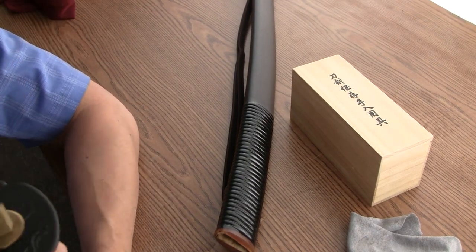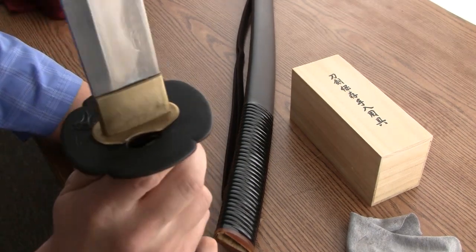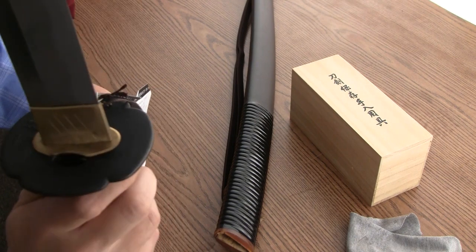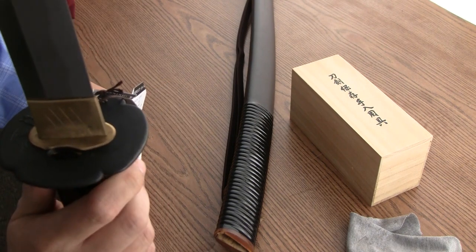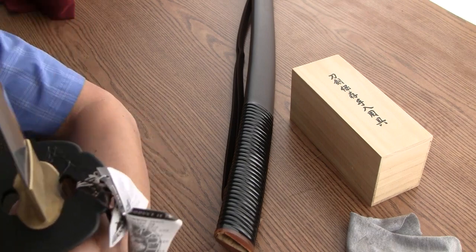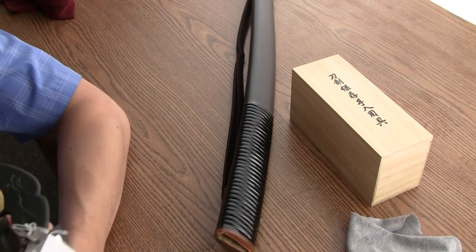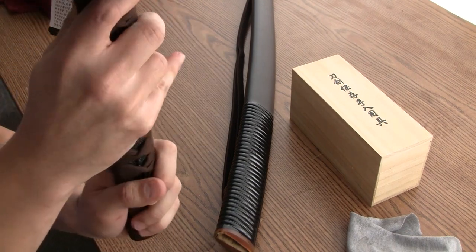28 and a half inch blade. These are a little over 2 and a half pounds. 2 pounds 11 ounces to be exact. 3 and a quarter inches of sori and 11 inch handle.